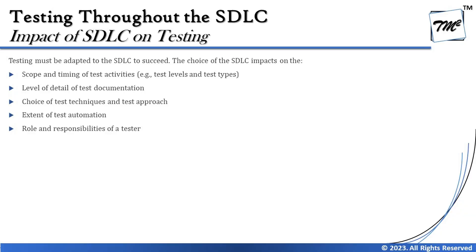Going deeper, the choices of SDLC model impact testing in several ways. First is the scope and timing of test activities — how test activities are organized and conducted. In waterfall, testing may happen later as phases close sequentially. In agile, all activities begin in parallel: designers design, developers write algorithms, and testers start preparing test conditions and writing test cases simultaneously, without waiting for prior phases to complete.